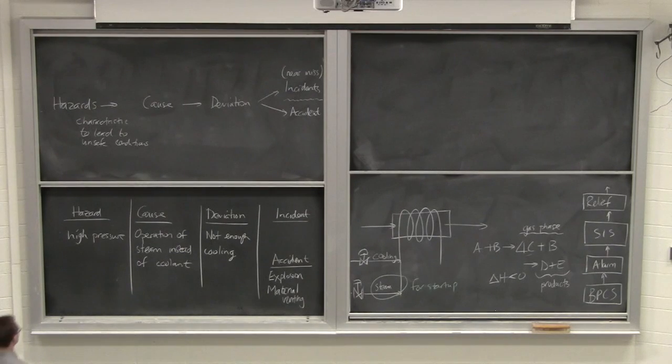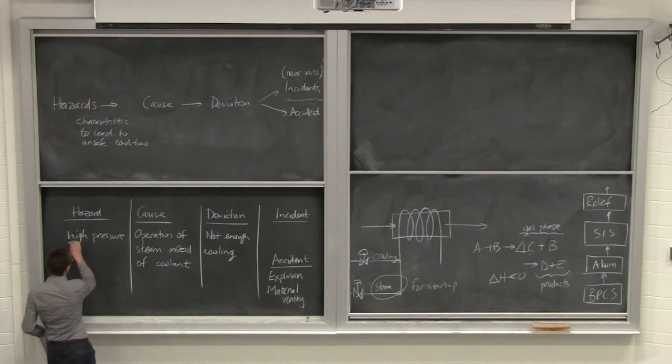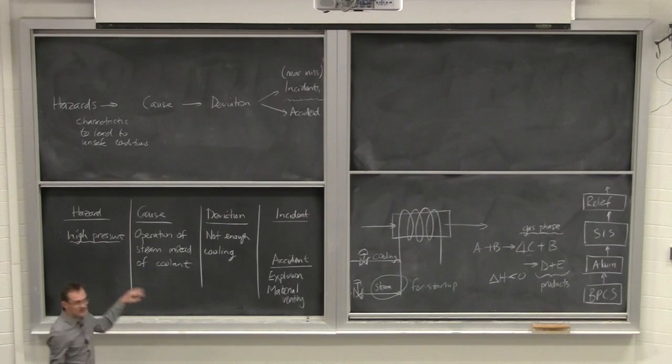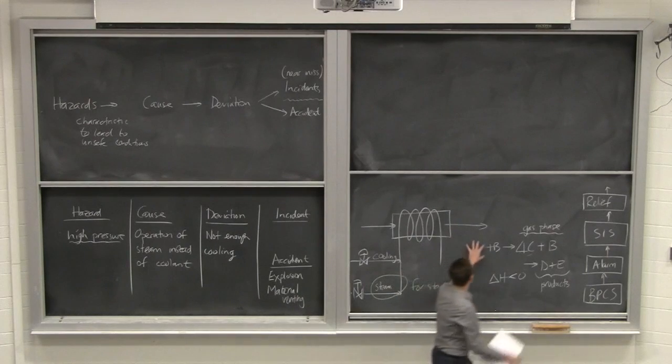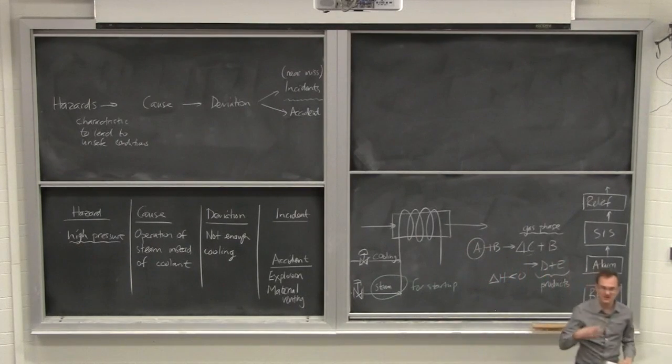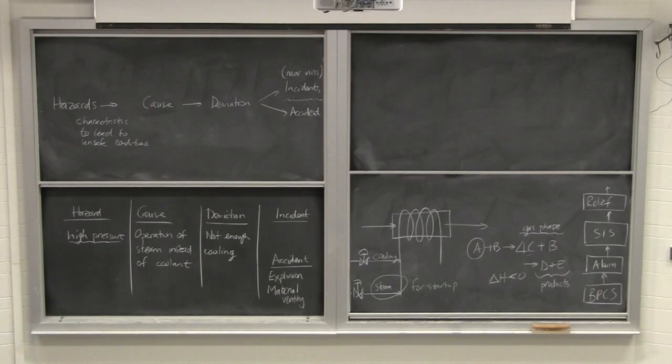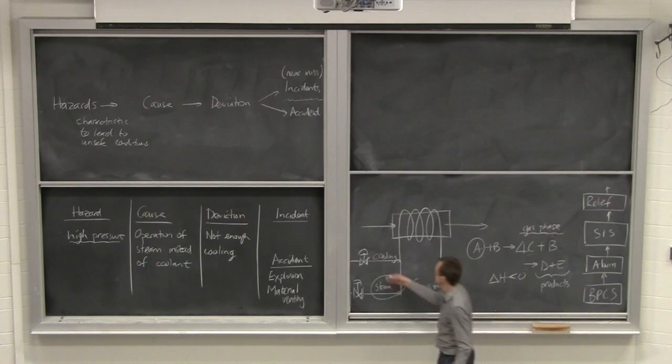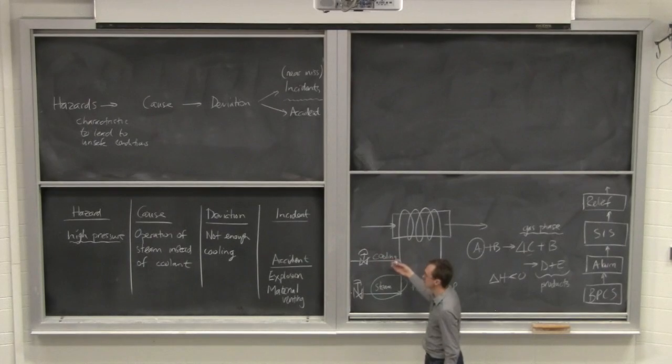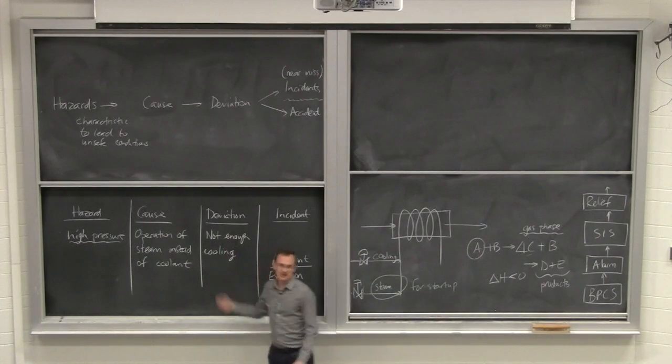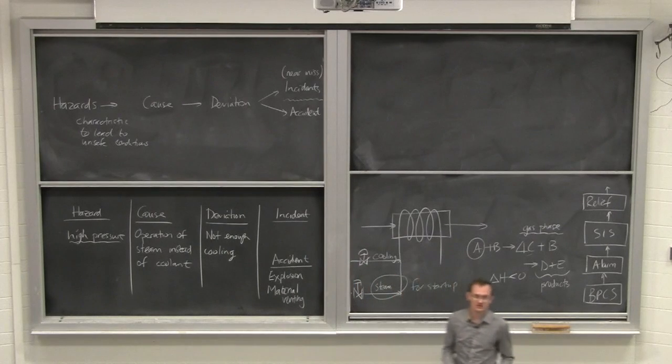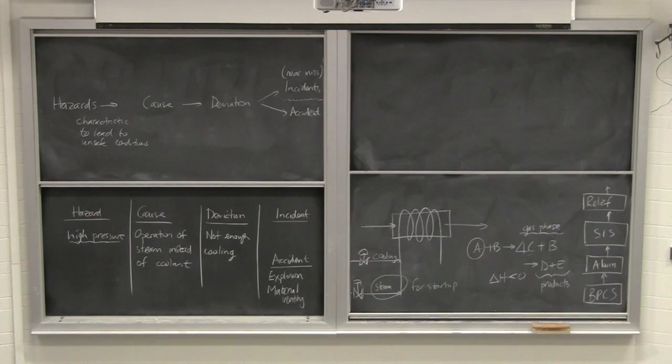Okay, now if you look at this hazard, it could be caused here by operation of steam instead of coolant, but it might also, the same sequence of events could have occurred by using a concentration of A that was higher than we normally do. Okay, so same way, same sequence of events just by using a higher concentration of reactants. Okay, and it might not even be the steam being opened, it might simply be the cooling flow rates dropping. So coolant flow drops, and again, the same sequence of deviations and causes occur.